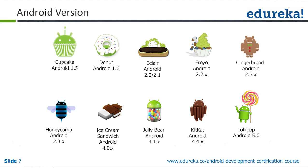Android started with version 1.5, called Cupcake, launched in 2008 — the very first version. Android has been slowly progressing since then. The latest version available in the market now is Android 5.0, called Lollipop. This course is completely updated for the Lollipop version, and we will also learn a few widgets newly introduced in the Lollipop release.